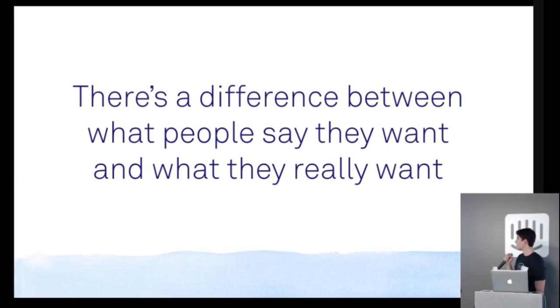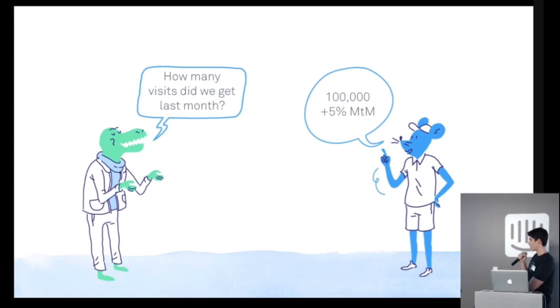I'll give you an example. So let's say the marketing dinosaur comes to the analytics mouse and says, how many visits did we get last month? And for the analyst, it's easy: 100,000 plus 5% month to month. So that's the right answer, but it's not particularly insightful. And it's particularly not insightful because it's not the right question.